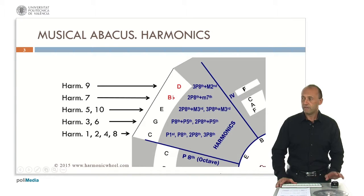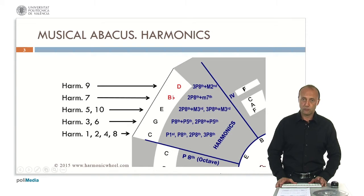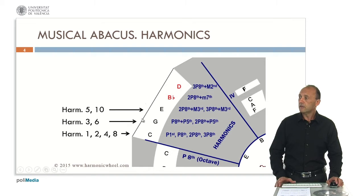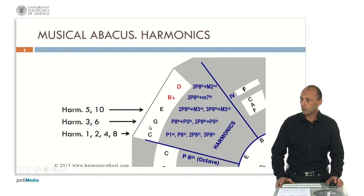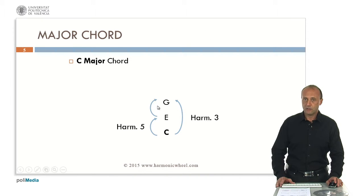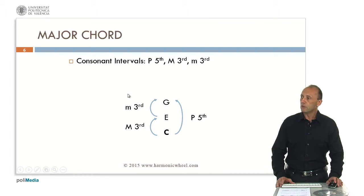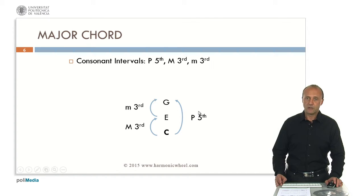If we start with note C, for example, and we look for other notes showing great relationship with it, we can start with its harmonics — in particular its first three harmonics, notes C, G and E — and with these notes we form the C major chord. The intervals among these notes are: from C to G is a perfect fifth, from C to E a major third, and from E to G a minor third. Because these three intervals are consonant, the chord is consonant too.